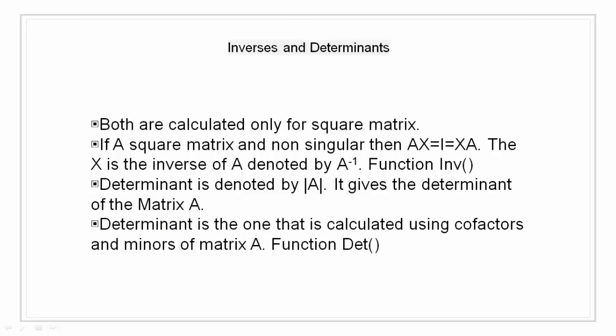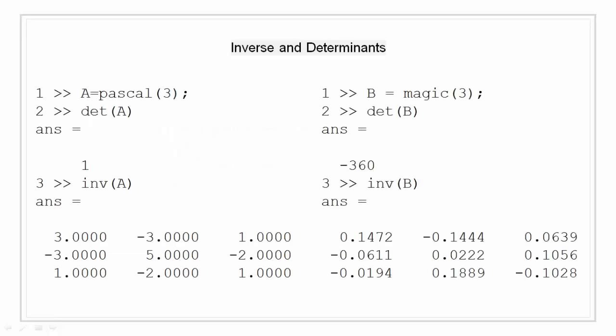Inverse and determinants. For a square matrix in linear algebra, the inverse and determinant of the matrix are calculated, because they are only applicable to square matrices. Mathematically, if A is a square and non-singular matrix, then AX = I and XA = I, so this X is the inverse of A, denoted A-inverse. The determinant is defined as the determinant of the matrix, calculated using the cofactor expansion of matrix A. For calculating the inverse we use the function INV, and for calculating the determinant we use the function DET. Here I have shown examples where I have used determinant and inverse on a square matrix.